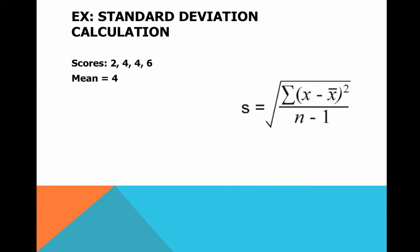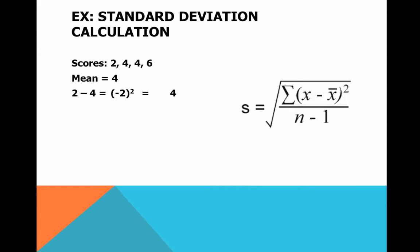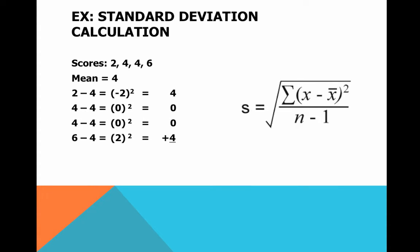The mean is four. We add two plus four plus four plus six and divide by four, which gives us four. Next, we take each score and subtract the mean from each of them: two minus four, four minus four, four minus four, six minus four — giving us differences of negative two, zero, zero, two. The next step is to square each of those differences: negative two squared gives us four, zero squared gives us zero, zero squared gives us zero, and two squared gives us four. Then we add up all of those squared differences: four plus zero plus zero plus four gives us eight.